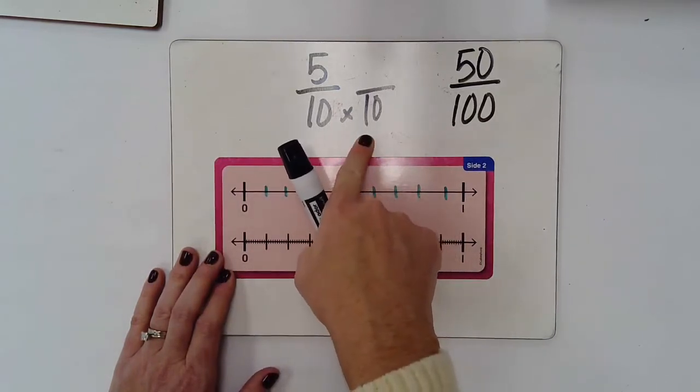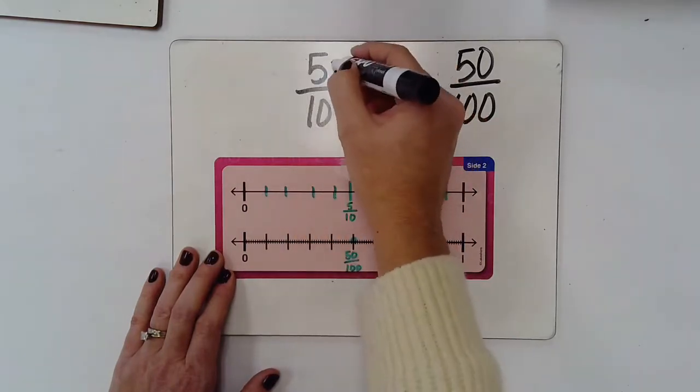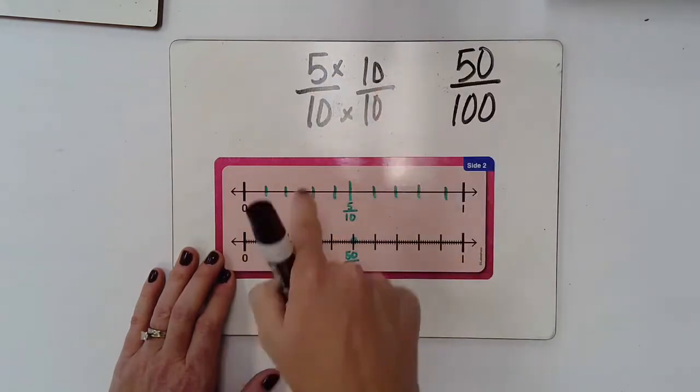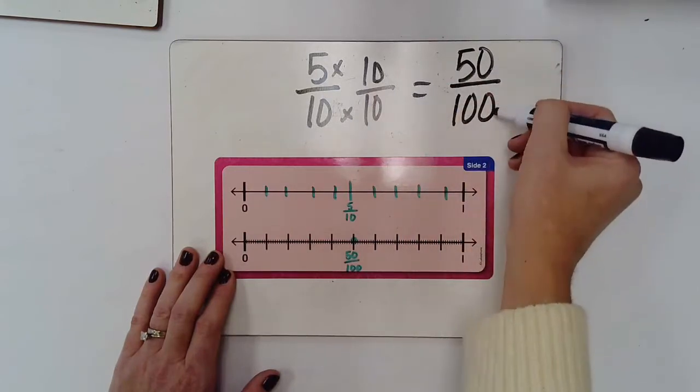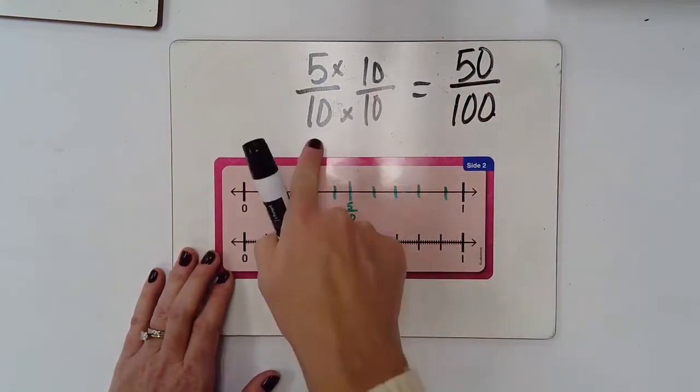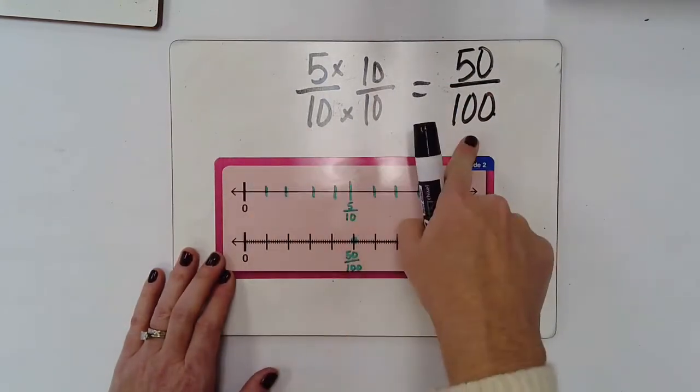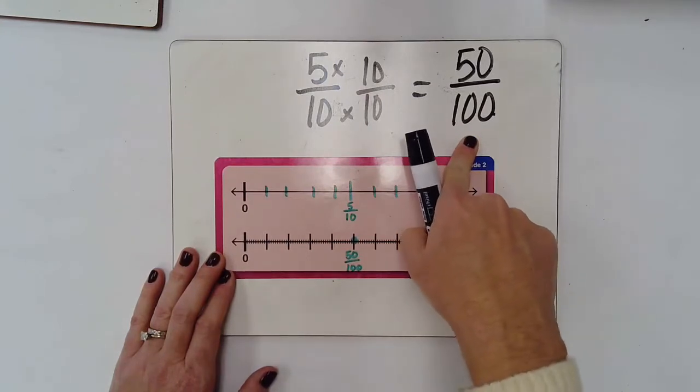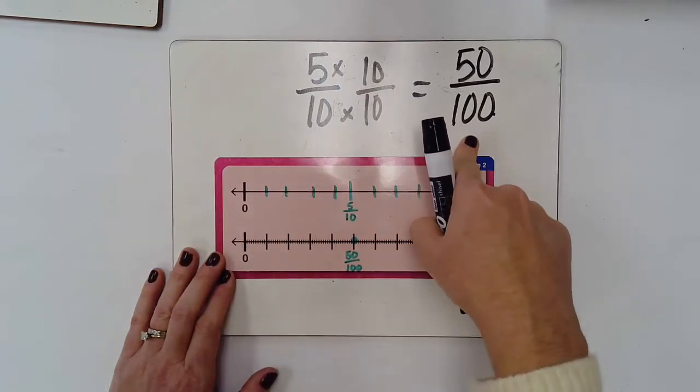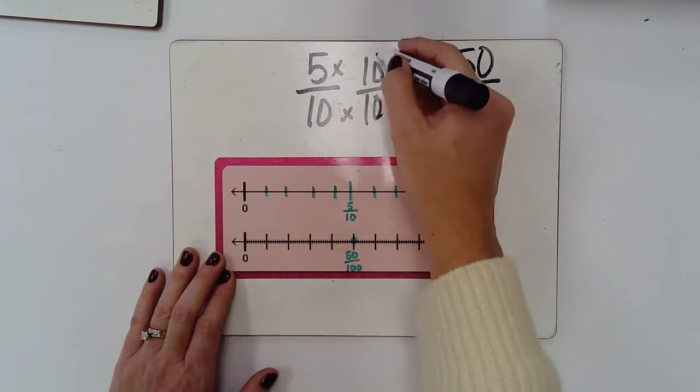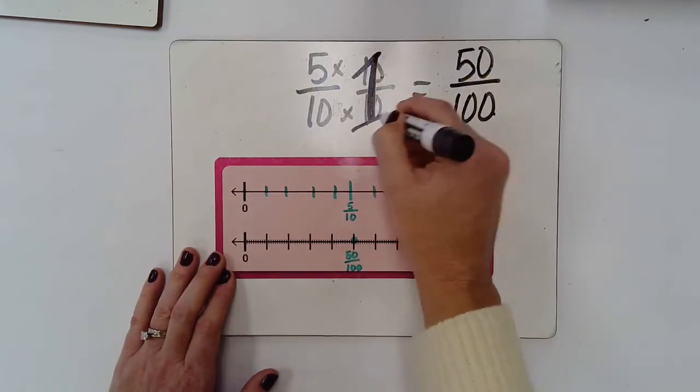And whatever I do to that denominator, I need to do the same thing to the numerator. So five times ten as well gives me fifty hundredths. Now, five tenths and fifty hundredths looks different, but they are equal.